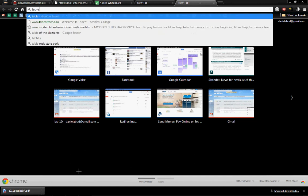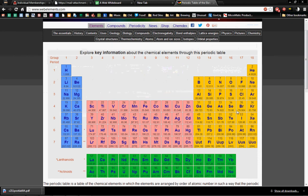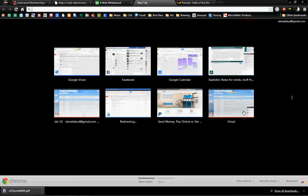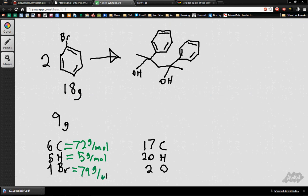And then for bromine, I'm not sure how much bromine weighs, so I'm going to look up a table of the elements. First one is usually pretty good. Find my bromine, it's 79, so I'll put that in, 79 grams per mole.